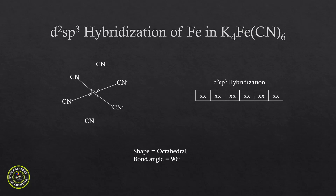A lone pair from each of the six cyano groups fills the square planar positions plus one bond above and one below, making it an octahedral complex with bond angles of 90° in all cases. The bond angle is 90° and this explains the geometry of K4Fe(CN)6. We already know that a coordination number of 6 gives octahedral geometry, while a coordination number of 4 gives either sp³ (tetrahedral) or dsp² (square planar).